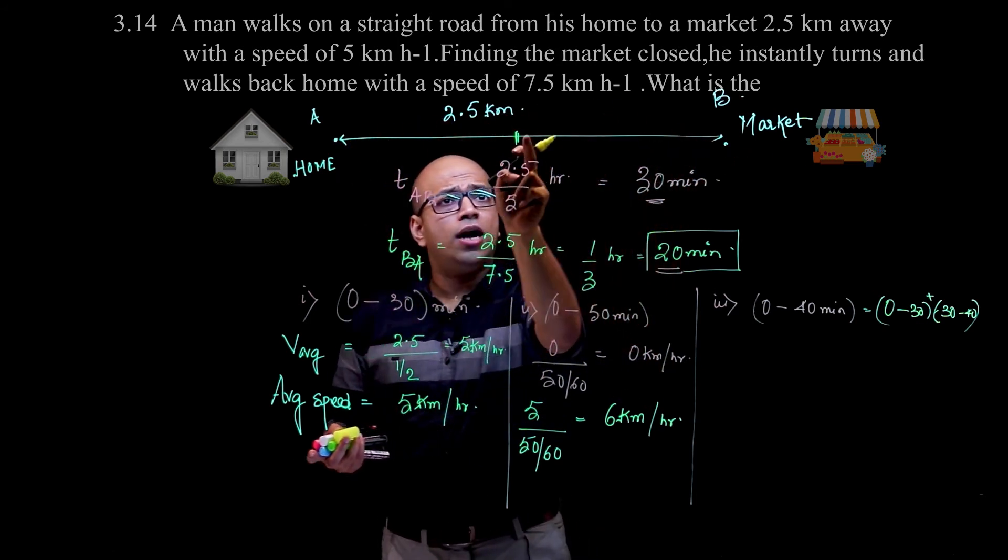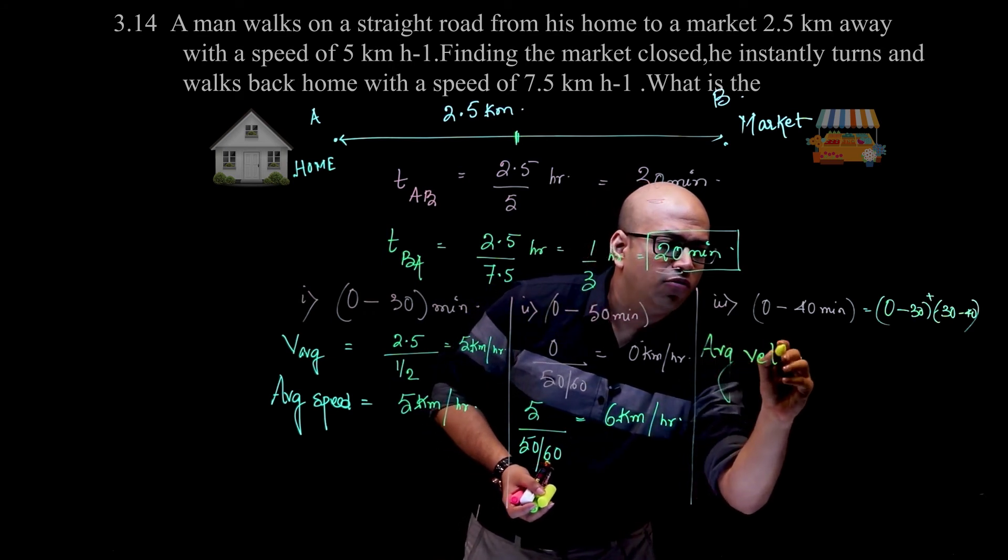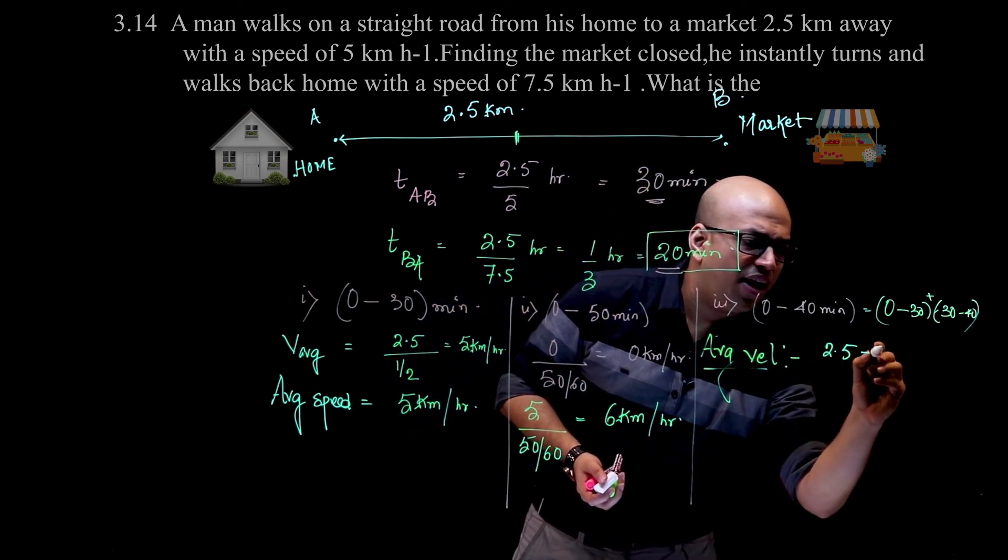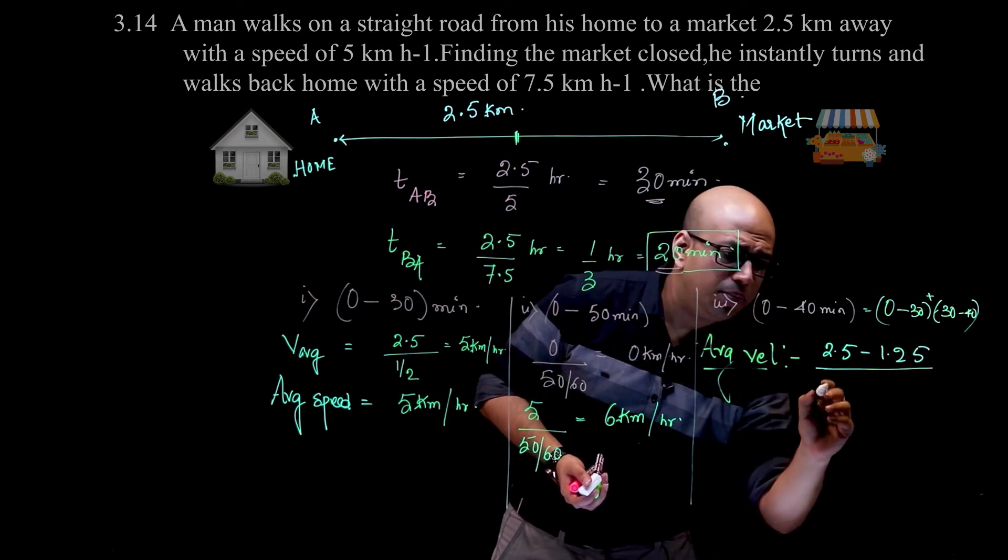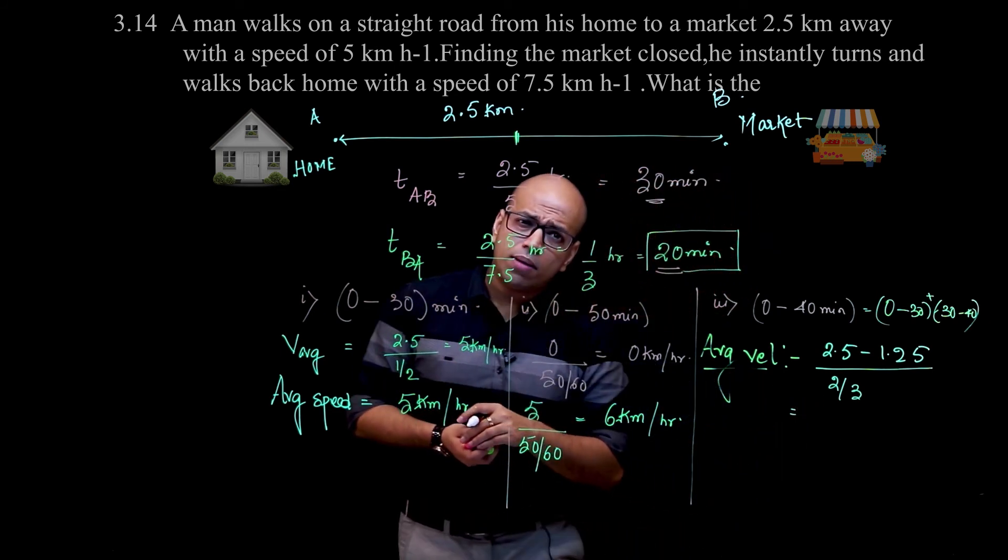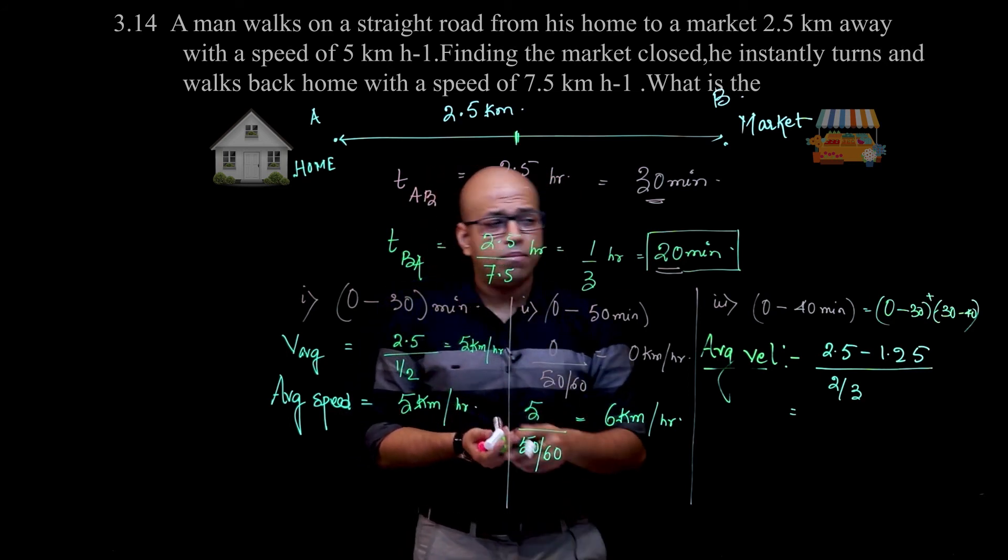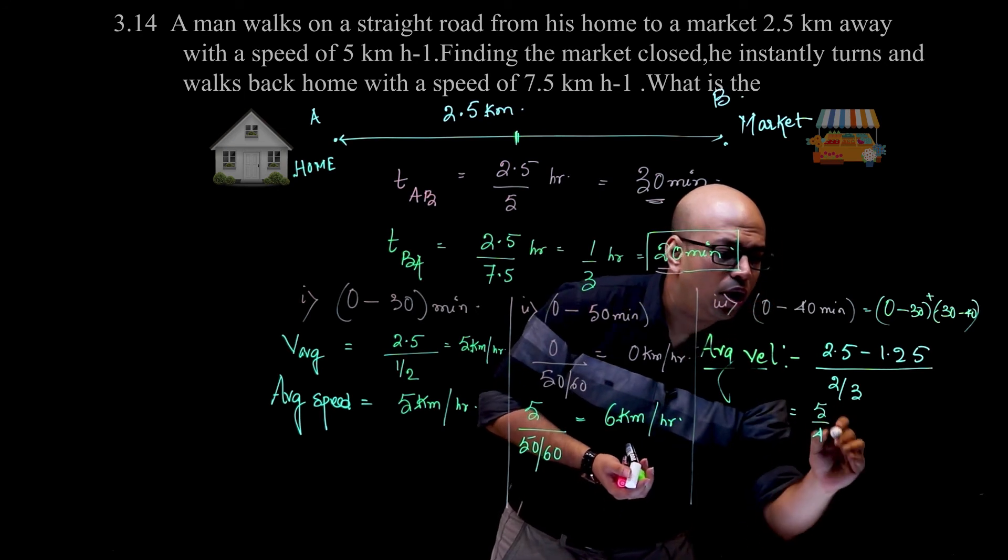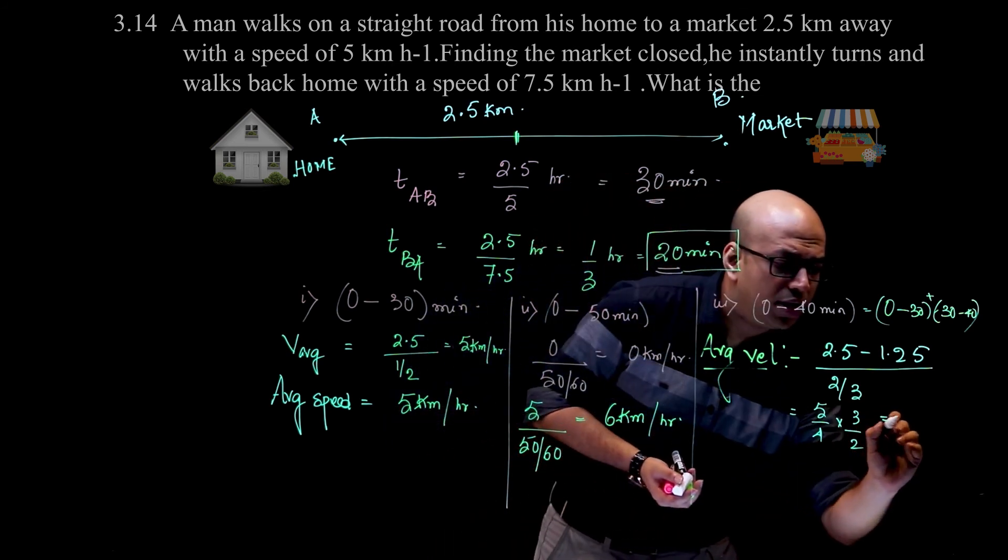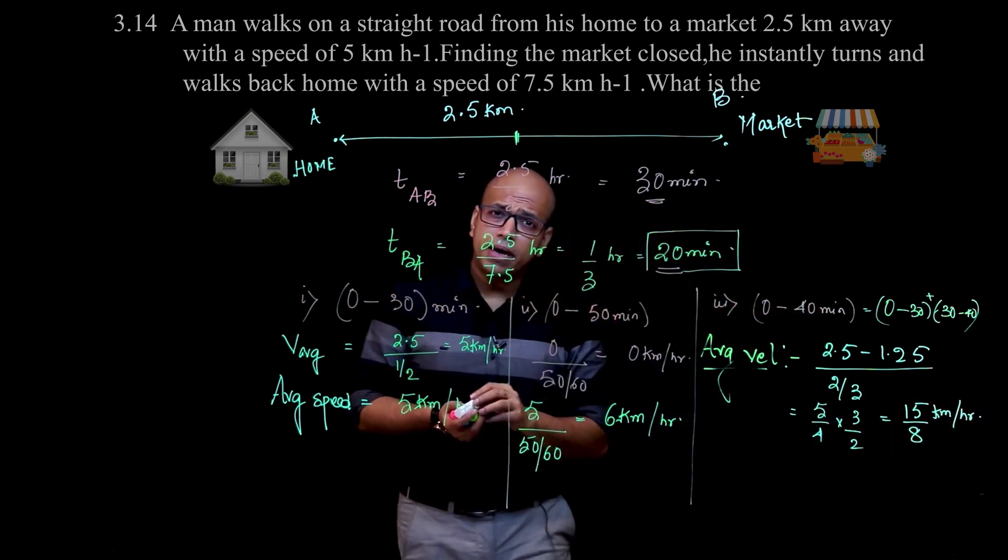Total distance covered is 2.5 plus 1.25 km, but displacement is 2.5 minus 1.25. So average velocity is 1.25 divided by 40 minutes, which is 2/3 of an hour. So 1.25 means 5/4 times 3/2, which ultimately gives you 15/8 kilometers per hour.